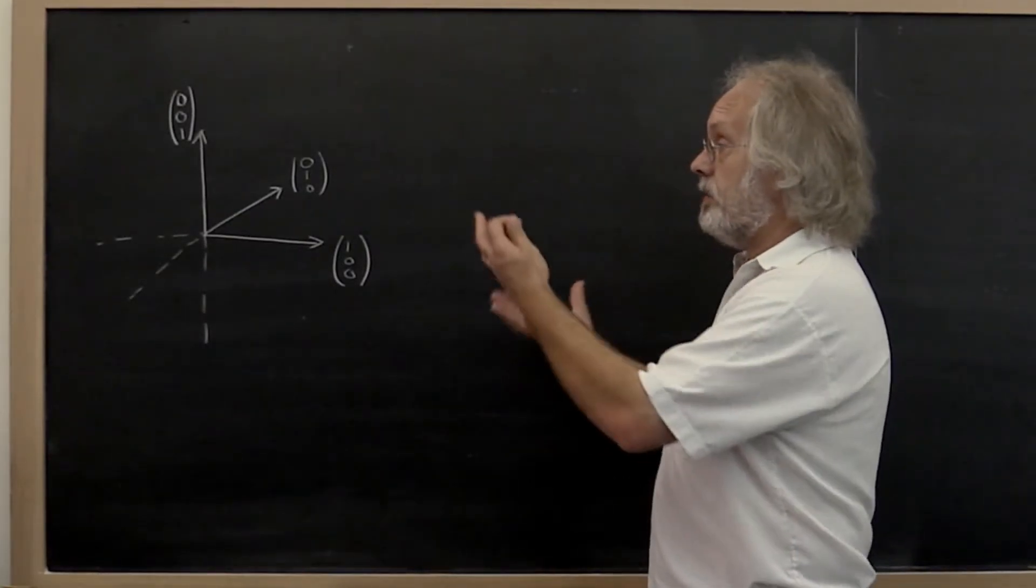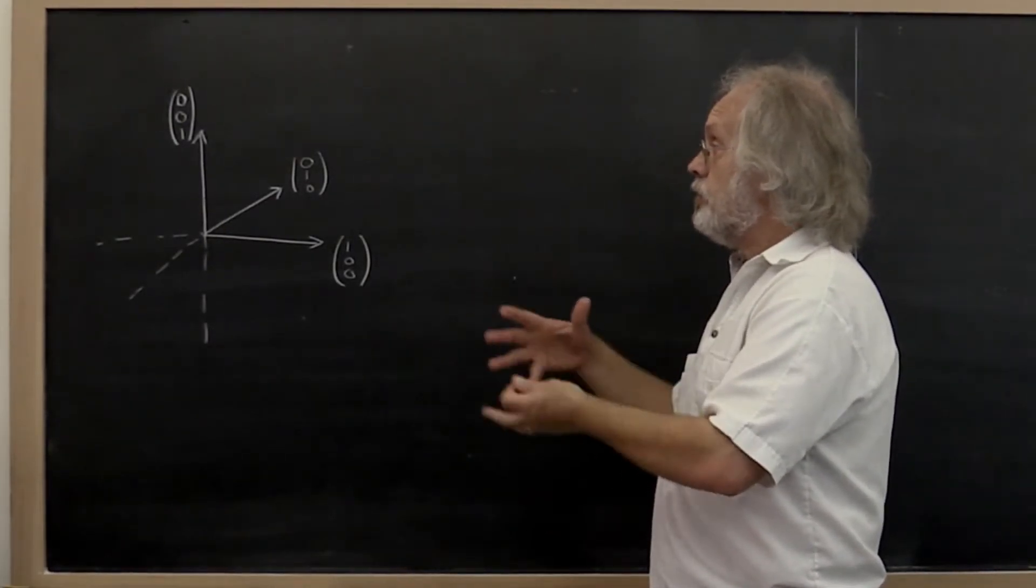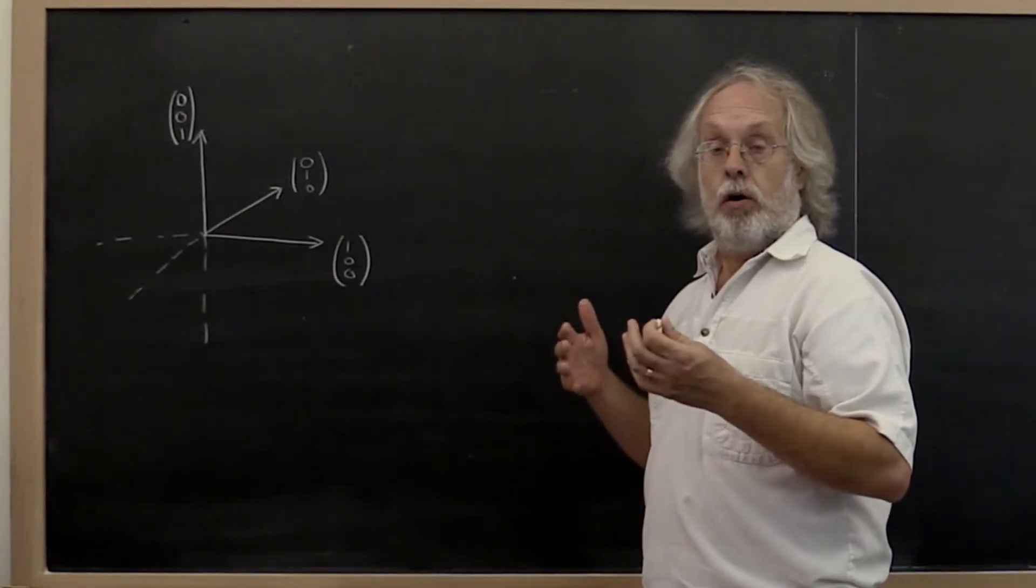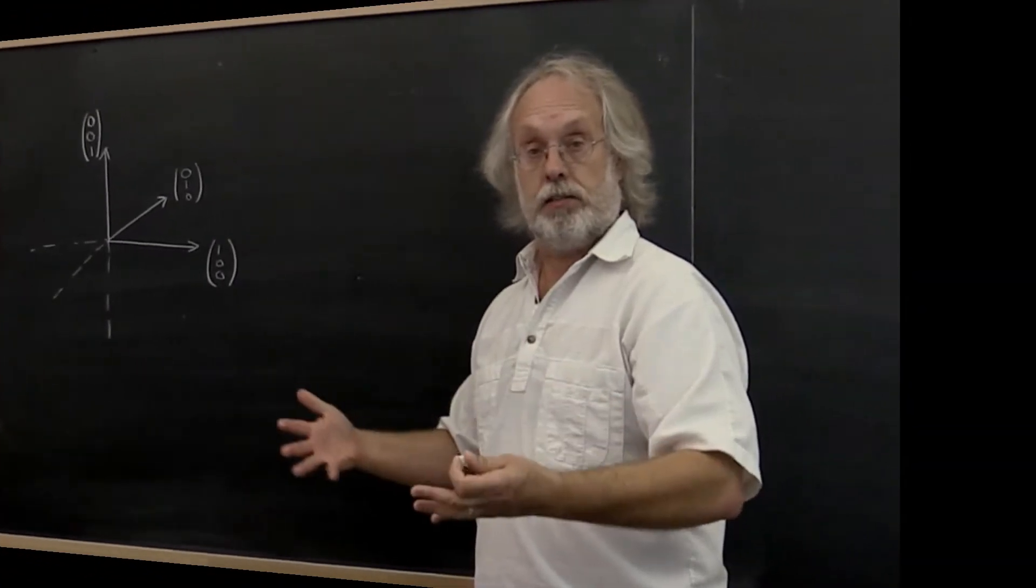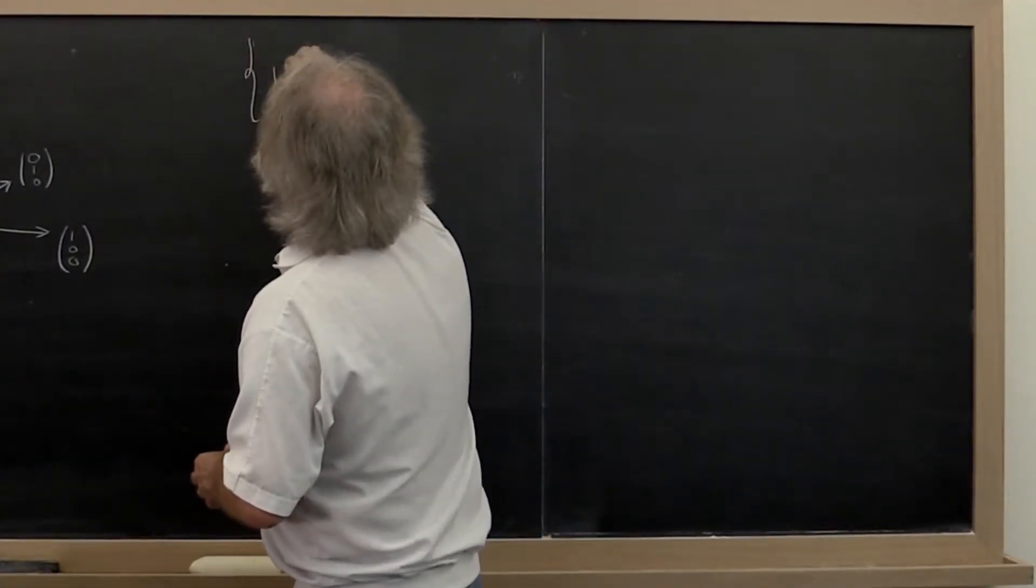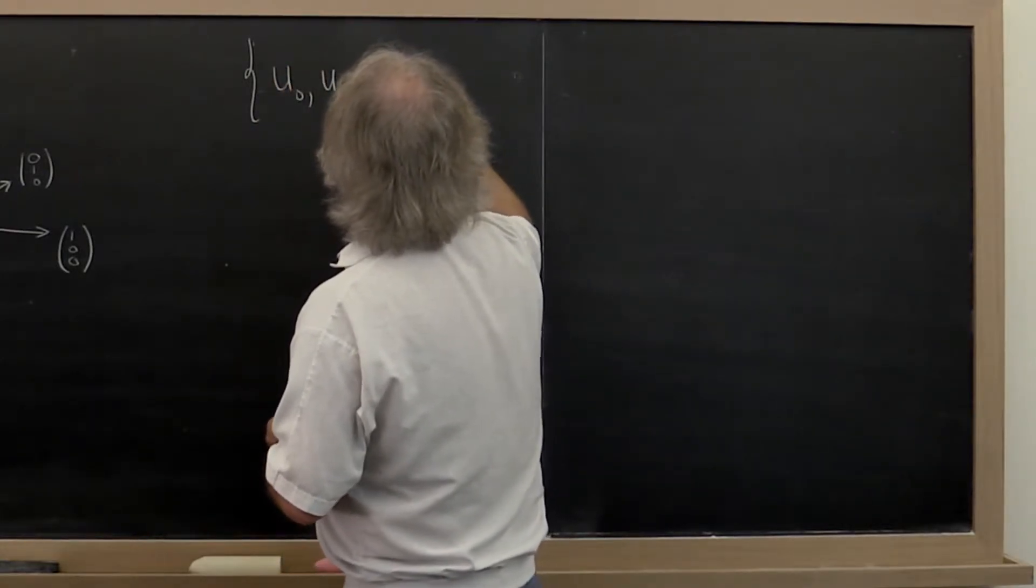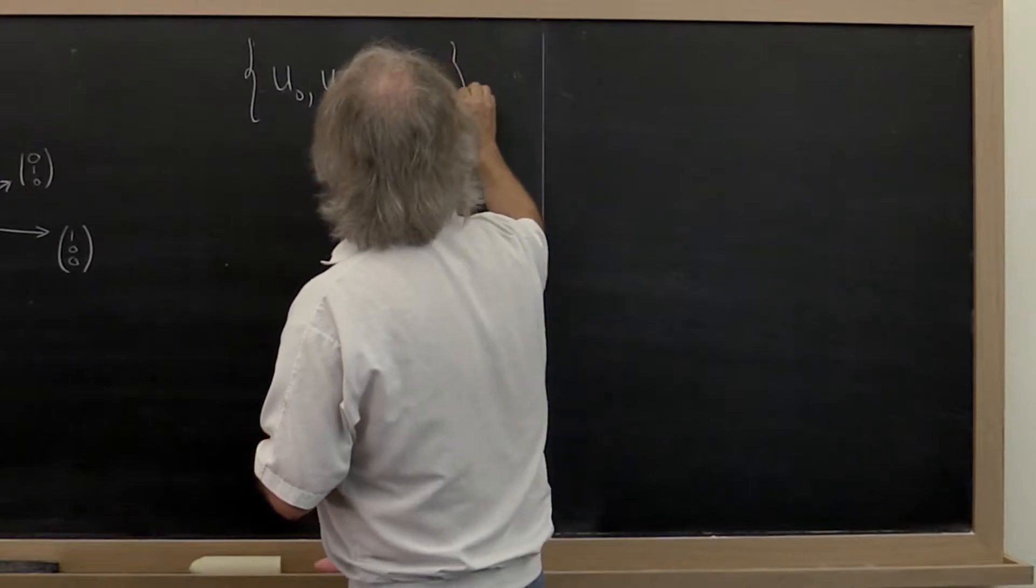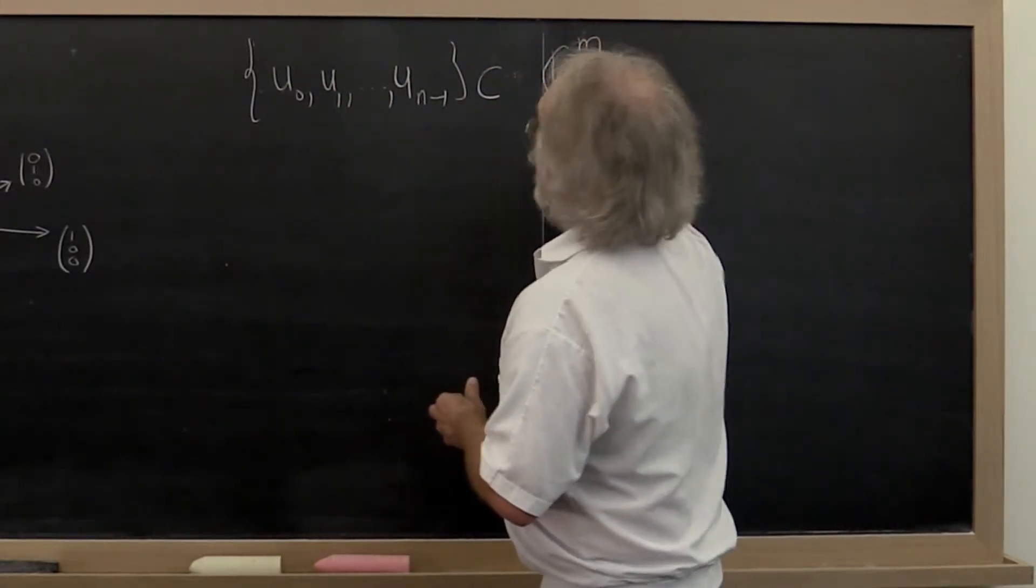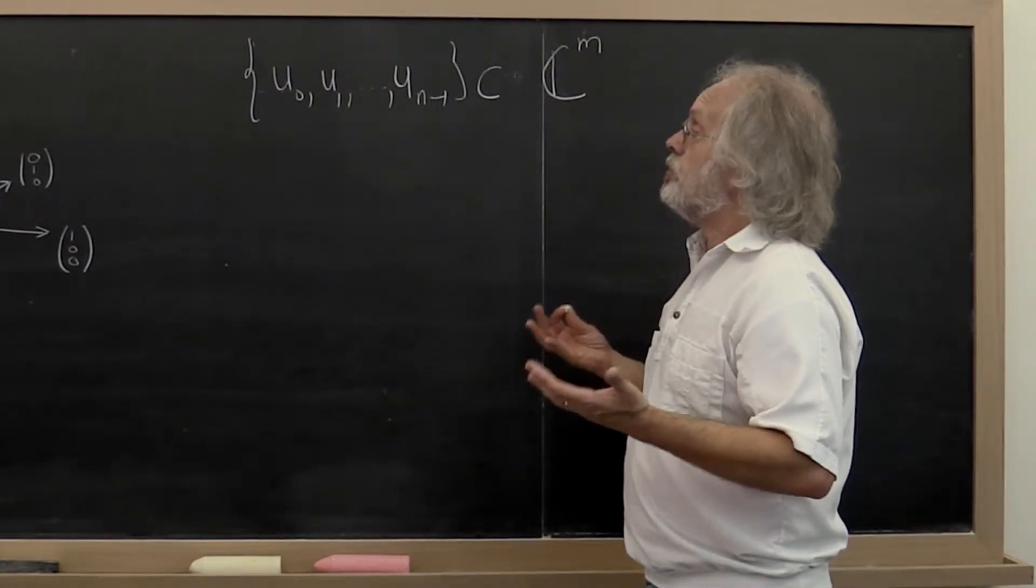Now a set of vectors that has this property, that they are of unit length and they are mutually orthogonal, are known as mutually orthonormal vectors. So a set of vectors u0, u1 through u_{n-1}, there's n of them, which is a set in C^m, is said to be mutually orthonormal.